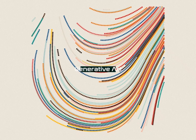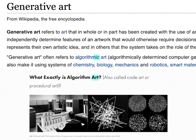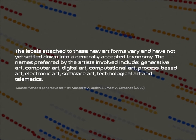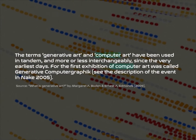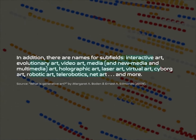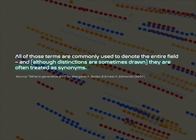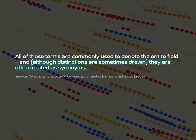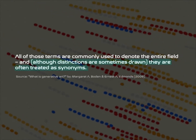Additionally, the term generative art is sometimes referred to as algorithmic art, computational art, and many others, even though some experts believe that some of these labels have distinct differences.